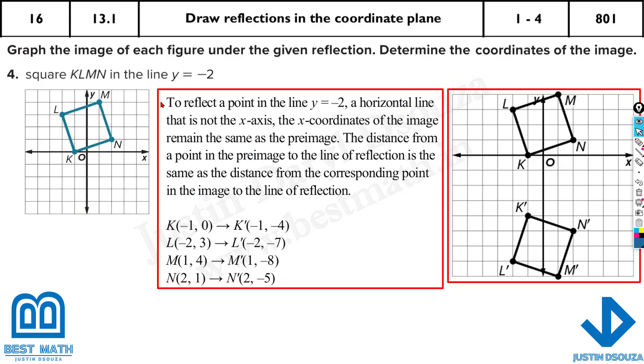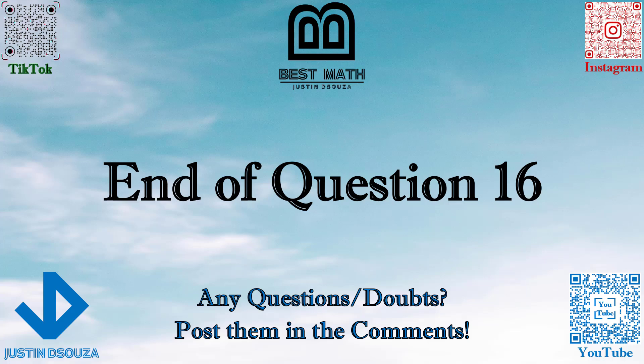Whenever it's x equals something, the y values remain the same. Whenever it's y equals something, the x values remain the same and only y changes. That is the end of this question. I hope it is clear — if you have any doubts, please re-watch the video or post in the comments. Thank you.